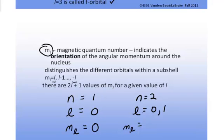The subshell L equals 0, which is the S subshell, can only have one orientation called 0. So, this L and M sub L value would go together. And then, when the value of L is equal to 1, then the M sub L associated with that L value would be negative 1, 0, and 1.